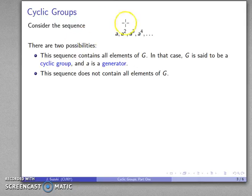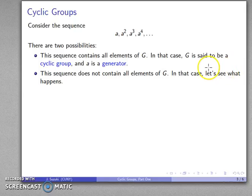The other possibility, of course, is that this does not contain all the elements of G. In that case, well, we'll see what happens. Most of mathematics really centers around this question: Let's see what happens. But for right now, we'll focus on the case where the sequence produces all elements of G, where A is a generator of the group.